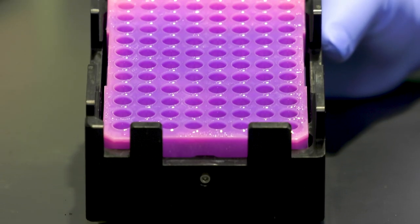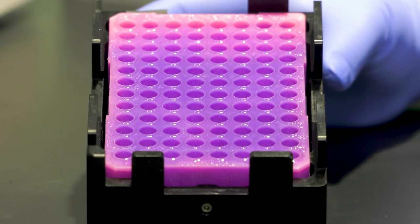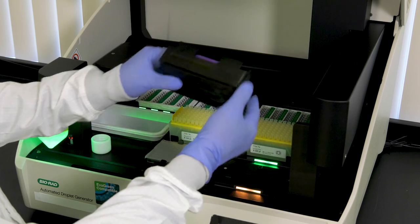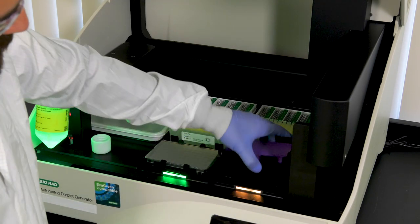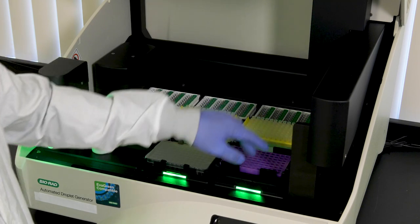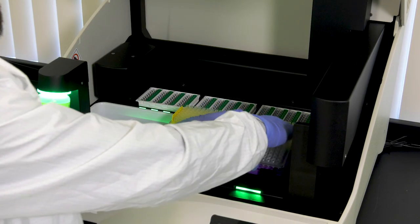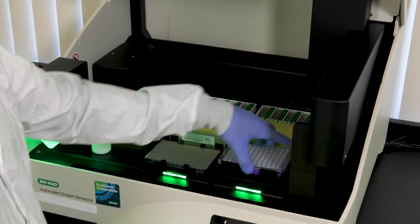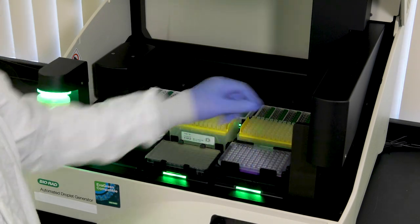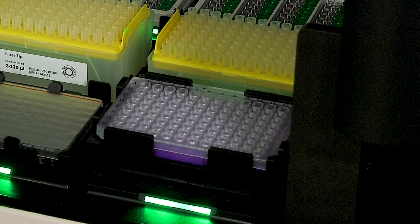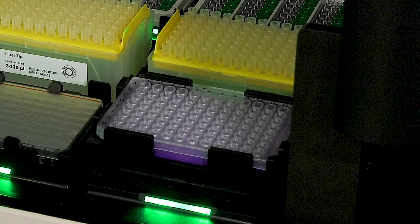Place the cooling block onto the front of the instrument and place a brand new DD-PCR 96 well plate into the cooling block. This is the plate where the automated droplet generator will deposit the droplets that are made from the reaction mix.